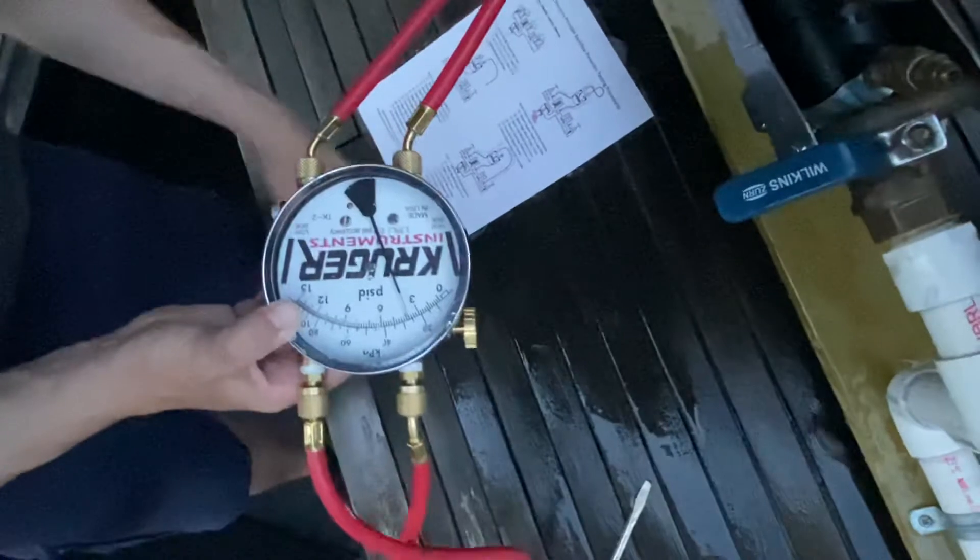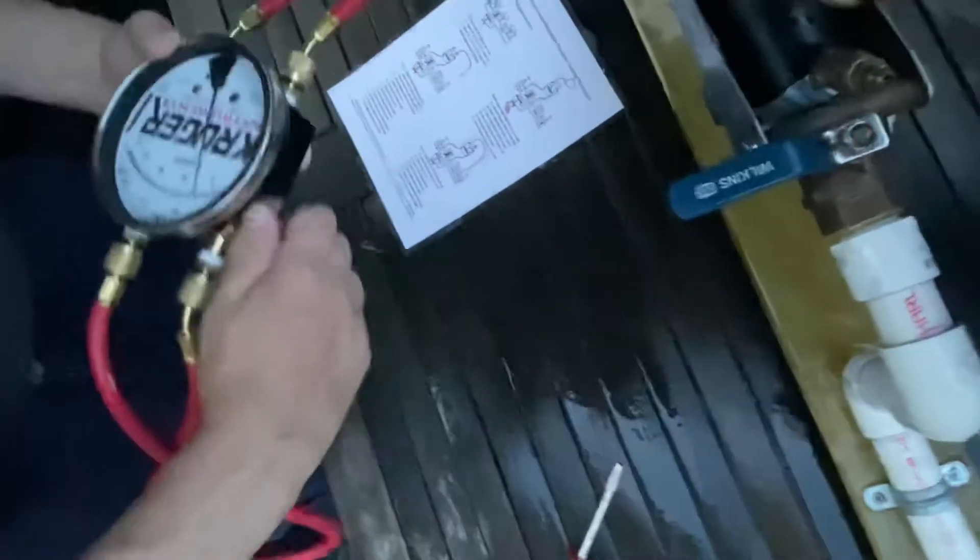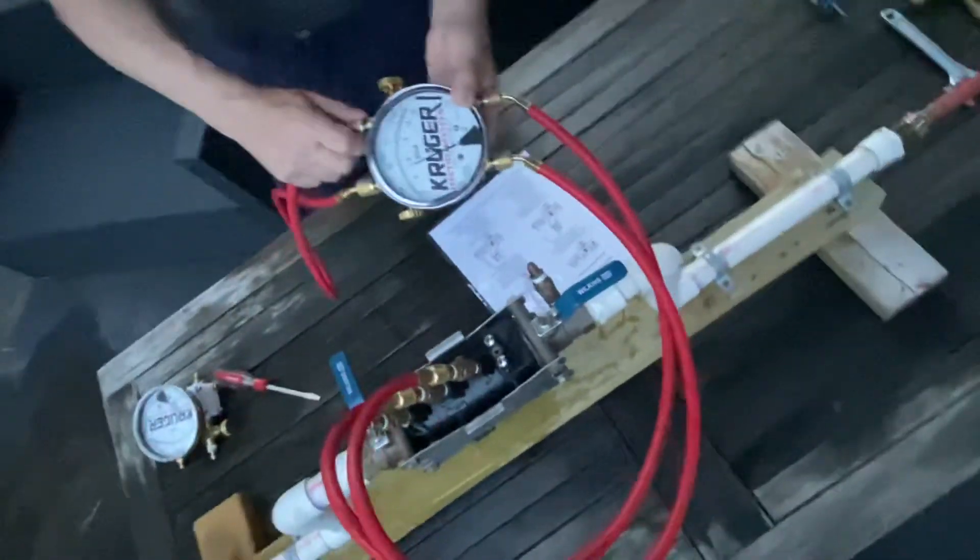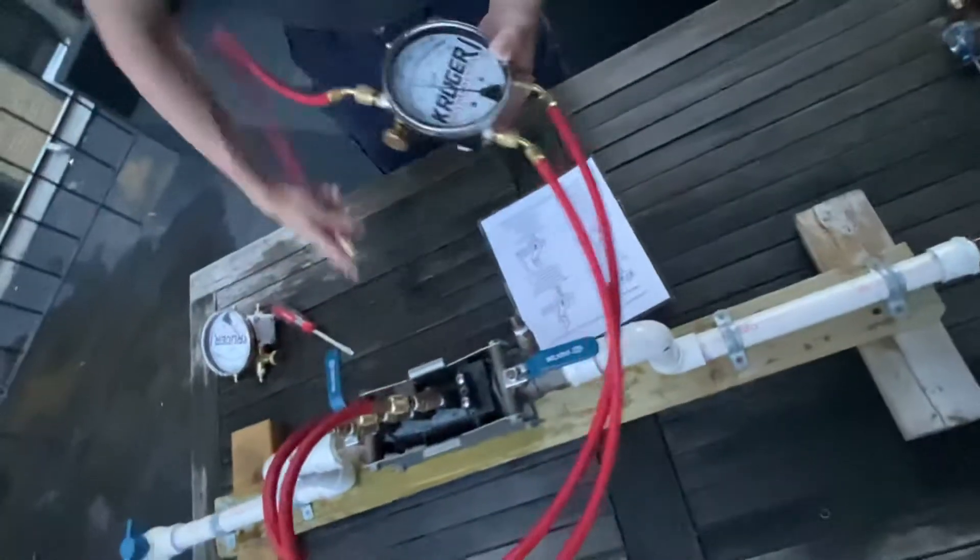Then you close both bleed valves and detach the bypass hose from the low side. So leave it attached to the high.